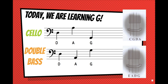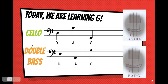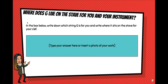I want you to go back and have a look at these slides when you're done. If you're playing violin or viola, your slide is slide 15 to find out where the note sits and where the string is. If you are playing cello or double bass, go to slide 16 and look at where your G string is on your instrument and where G sits on the staff. Then fill this in: where does G live on the stave for you and your instrument? Remember, stave and staff mean the same thing. In the box below, write down which string G is for you, and where it sits on the stave for your clef — does it sit on the first line, the middle line, or the top space?